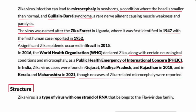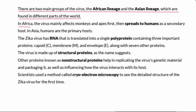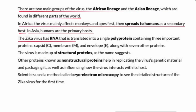Structure: The Zika virus is a single-stranded RNA virus that belongs to the Flaviviridae family. There are two main lineages of the virus — the African lineage and the Asian lineage — found in different parts of the world. In Africa, the virus mainly affects monkeys and apes first, then spreads to humans as a secondary host. In Asia, humans are the primary host. The Zika virus has RNA that is translated into a single polyprotein containing three important proteins.